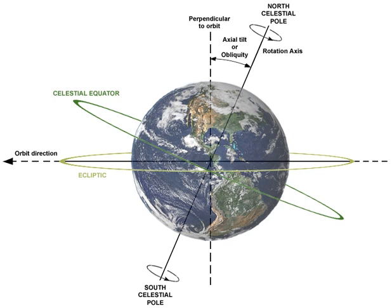As the observer moves north or south, the celestial equator tilts towards the opposite horizon.